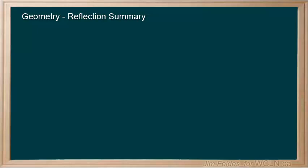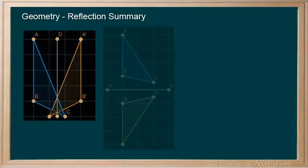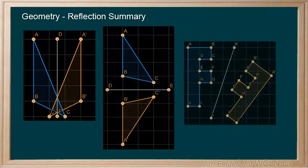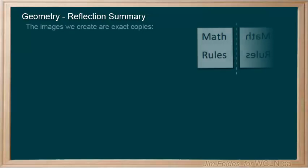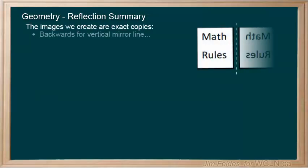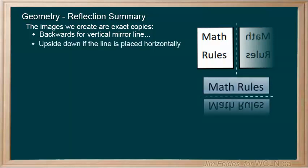In this third type of transformation, we explored what happens when we reflect figures in different orientations. The images we create are exact copies, that are either backwards for a vertical mirror line, or upside down if the line is placed horizontally.